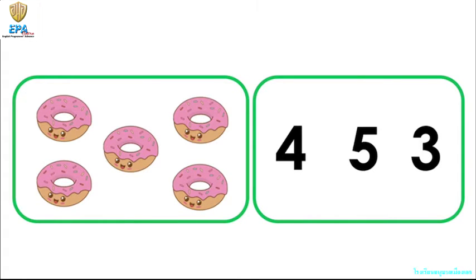Now, look at the next box. You can see numbers four, five, and three. Now, we are going to find where is number five. Four, five, and three. Cross out number five. Very good. That is number five.